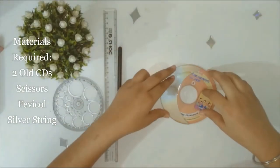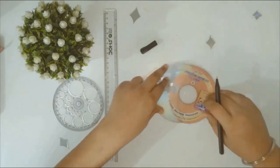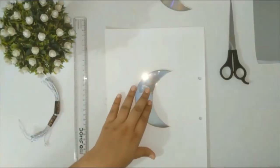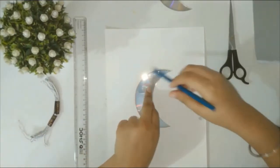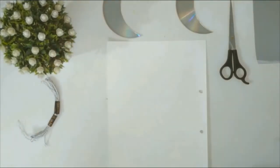I have already cut out a moon from a CD and now I'm tracing it on another CD. You have to cut it out and then I'm tracing it on a sheet of white paper or any color you can take, because in the end we have to cover it.